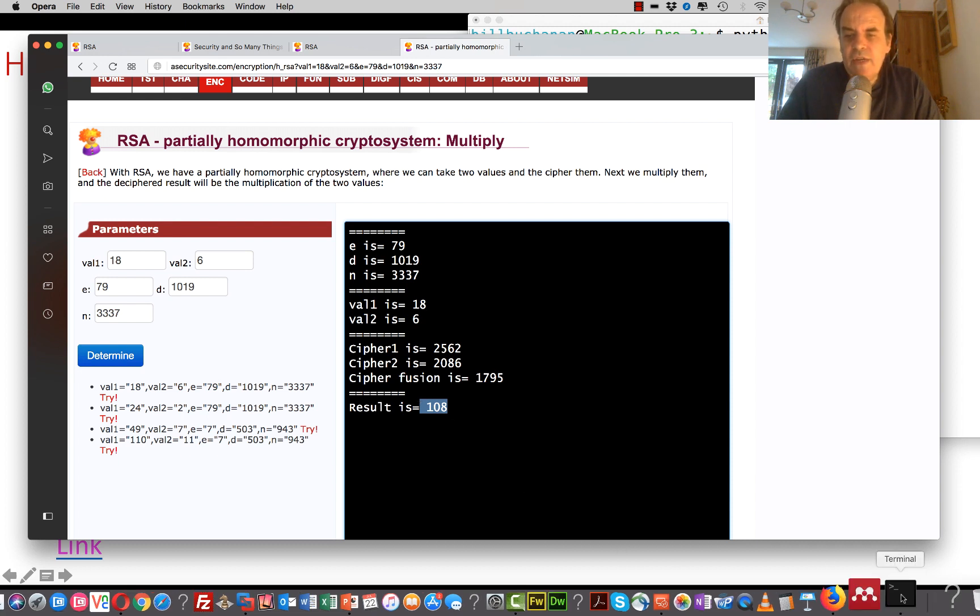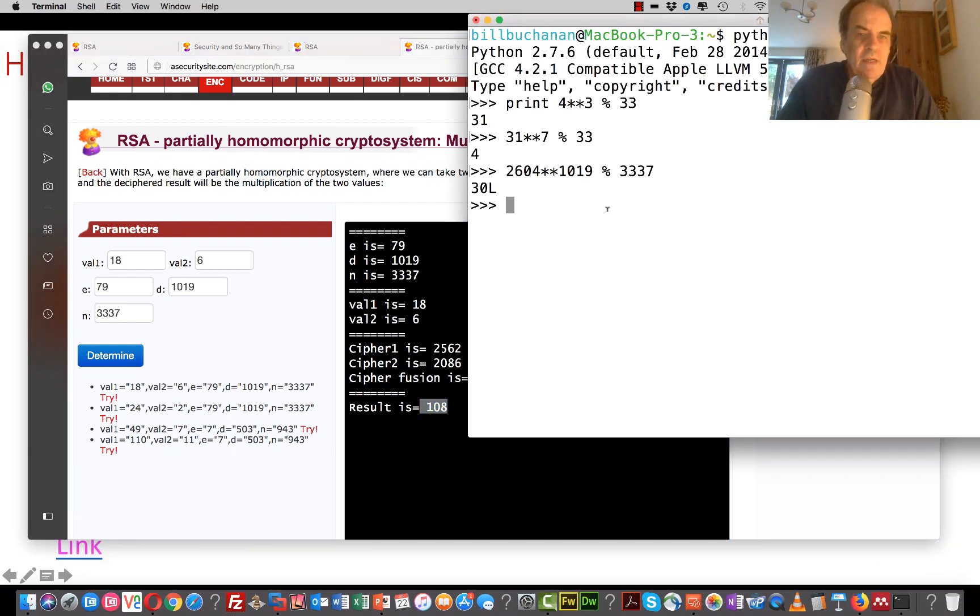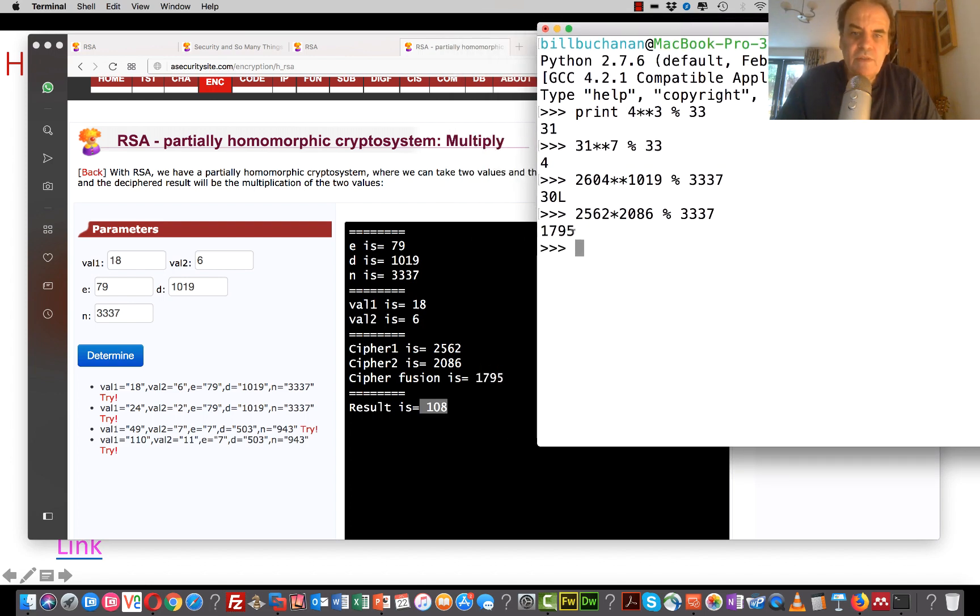Again, if we want to check that. So we can go through the ciphers. So the cipher is 2562 times 2086. And again, we take the mod, which is 33337. And the value that we get is 1795.